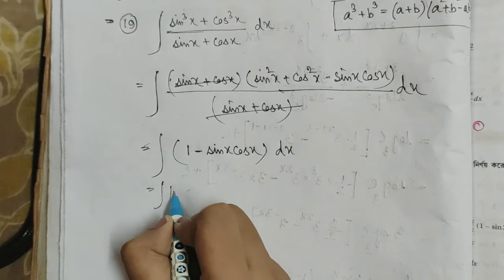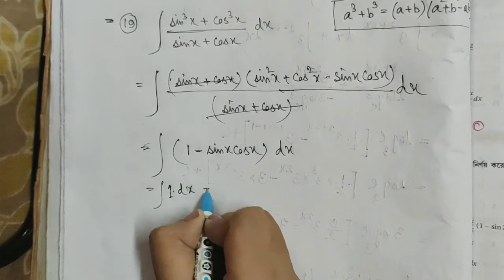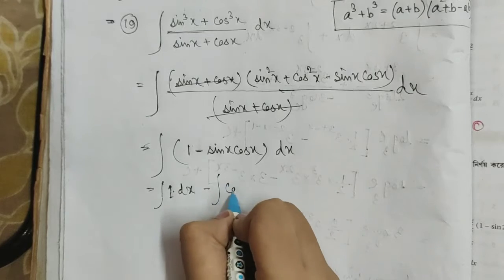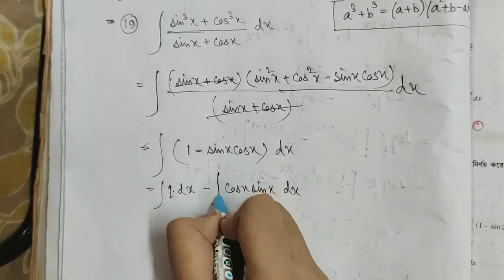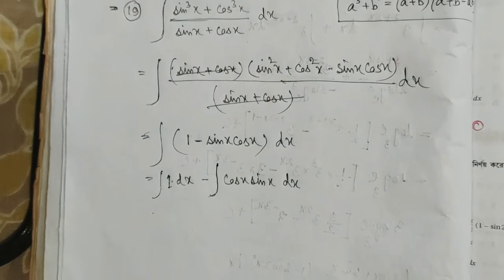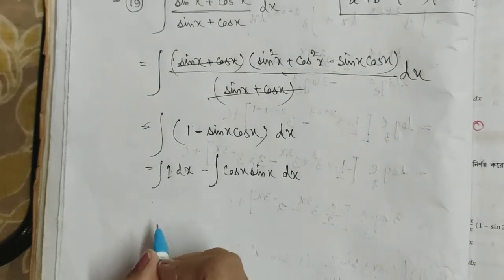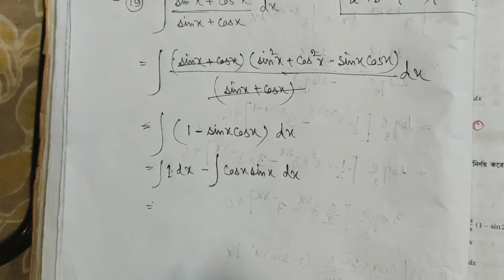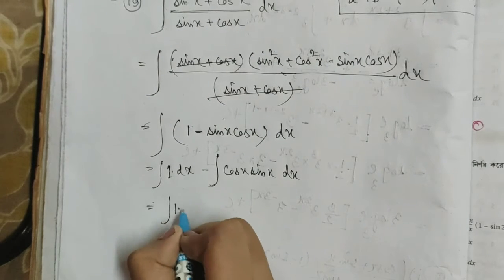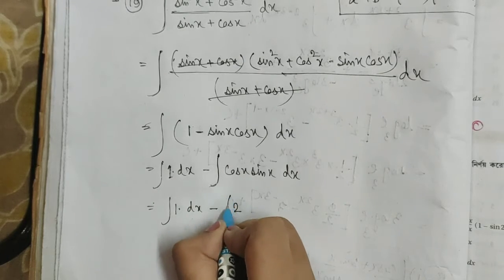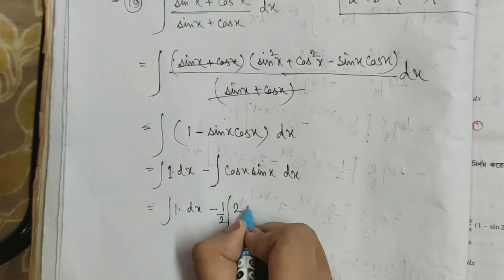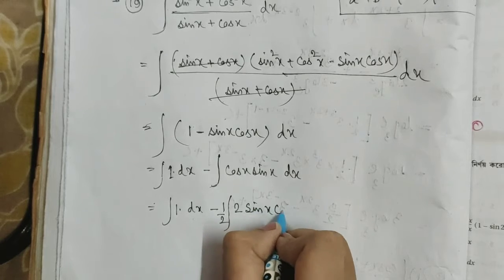Integration can be done, so 1 dx minus cos x sin x dx — this is the integration. This is the formula we know. sin x and cos x — we know these formulas, and we know the arrangement.